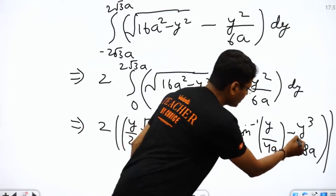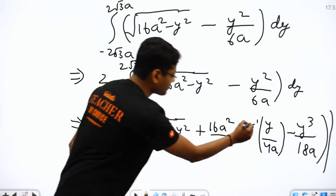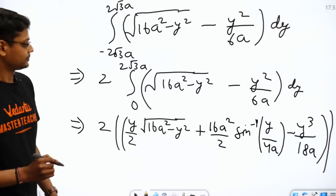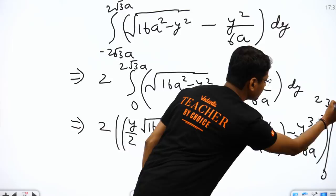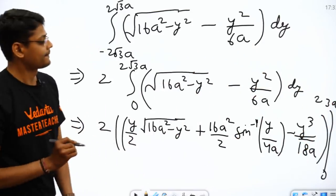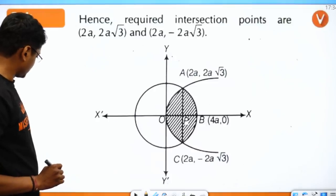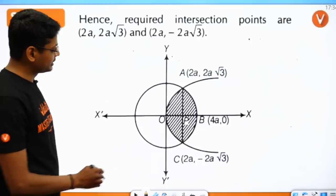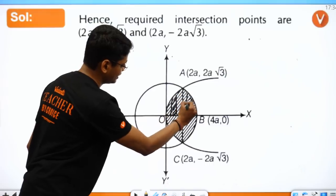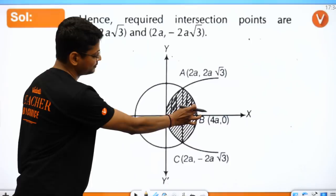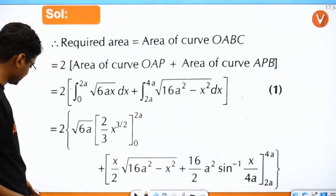Using standard results: this becomes 2 × [y/2 · √(16a² − y²) + (16a²/2)·sin⁻¹(y/4a) − y³/(18a)] evaluated from 0 to 2√3·a. You can put the limits and get the final answer. There is also another method where vertical strips are used, integrating the two curve segments above the x-axis and multiplying by 2.